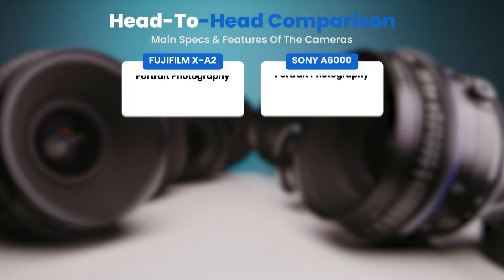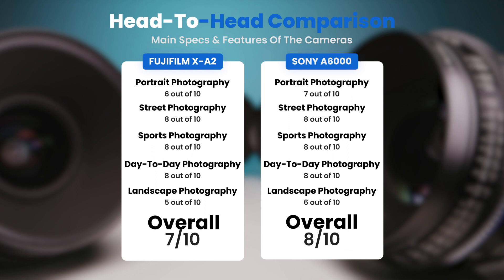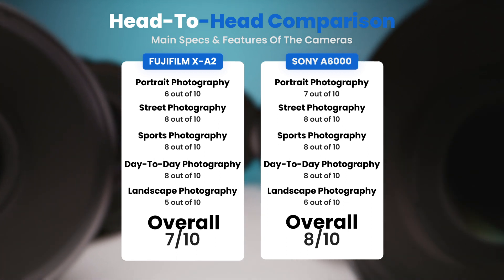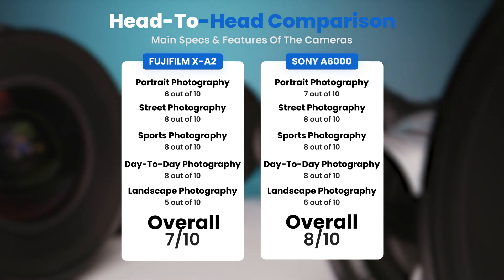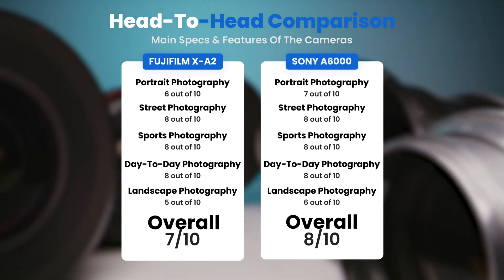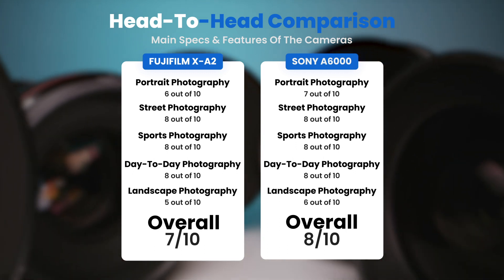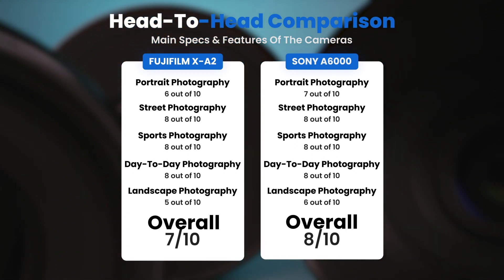To conclude, here are our overall ratings for both of these cameras. Fujifilm X-A2, we give it an overall rating of 7 out of 10. Sony A6000, we give it an overall rating of 8 out of 10.